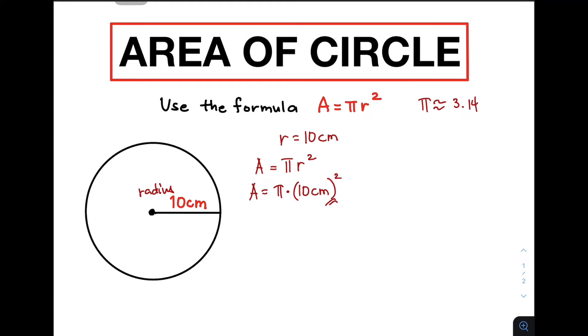So, what we have here is A is equal to pi times 10 centimeters squared. And simplifying this, 10 centimeters squared is simply equal to 100, so A equals 100 pi centimeters squared.